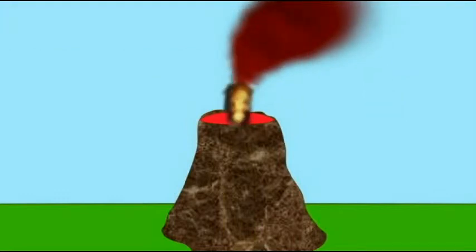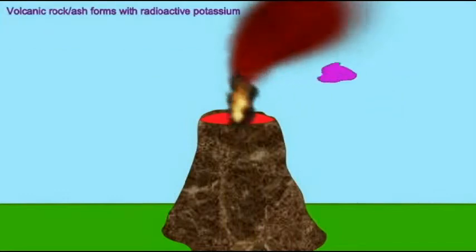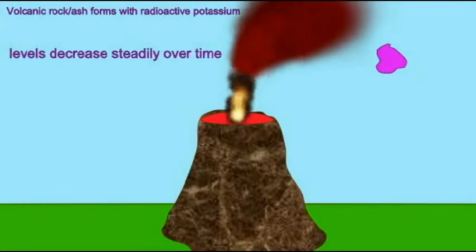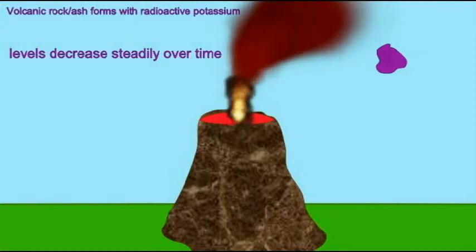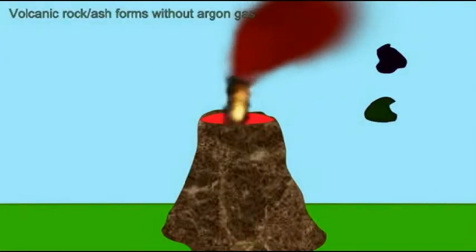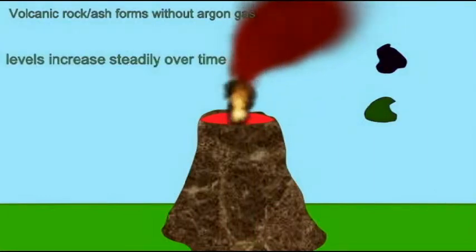Radioactive argon, however, increases. When the rock first forms, there is no argon gas in this new volcanic rock. Any argon which existed can be lost as the molten rock hardens. But as radioactive potassium decreases, it becomes argon, whose level then increases over time.